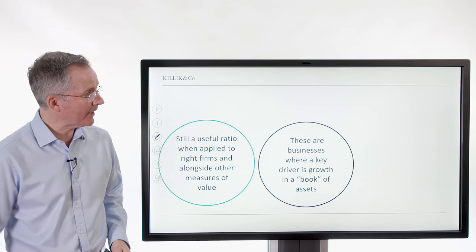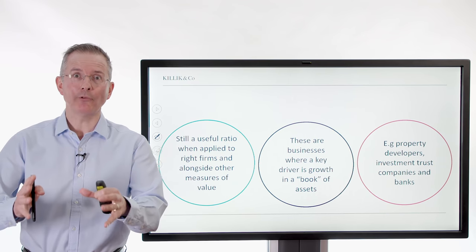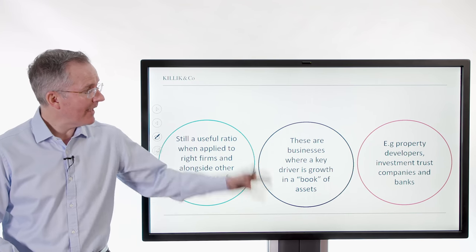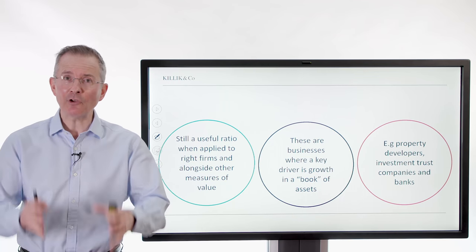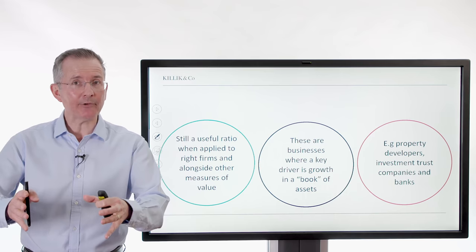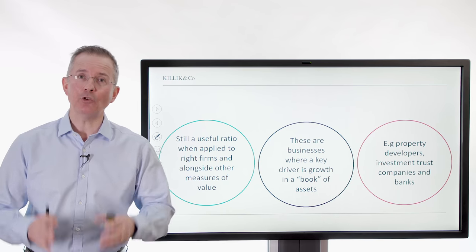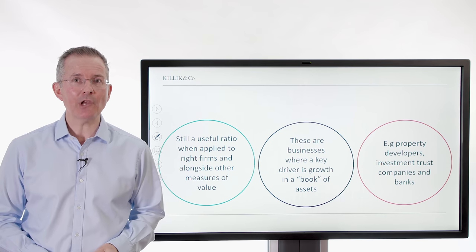It still works in those firms where that's the case, and that will tend to be firms with a decent book of assets of one sort or another. So property development firms, investment trust companies, and banks. This could still be one of your key, if not the key metric you apply. But it doesn't work as well, certainly not in isolation, outside there. You do need to be more careful. But that's the case with many ratios.